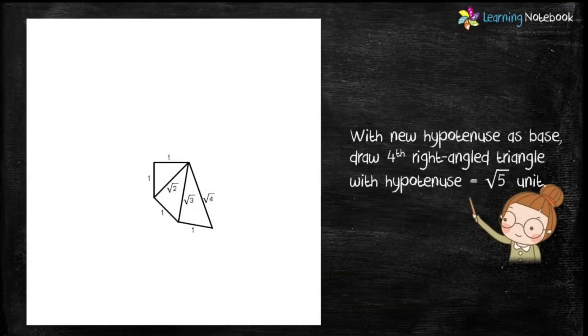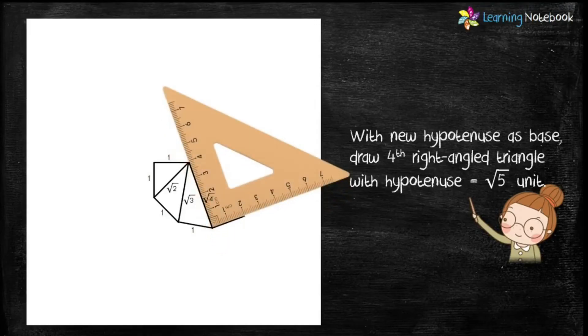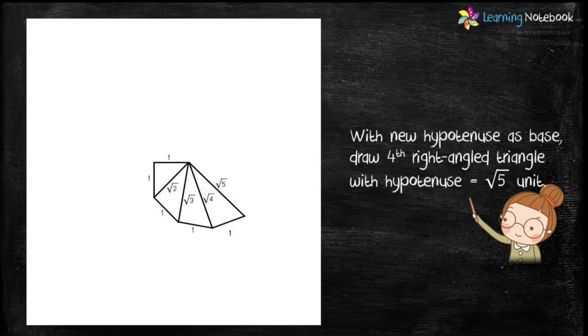Next, with the new hypotenuse as base, draw the fourth right-angled triangle with hypotenuse equals to root 5 units.